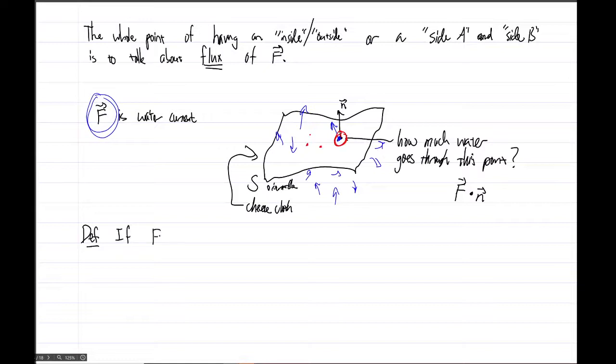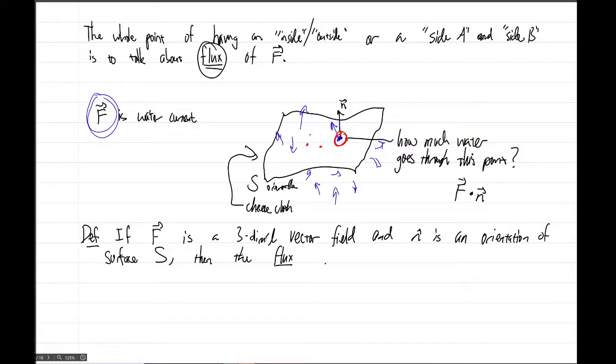So here's a new definition: if f is a three-dimensional vector field and n is an orientation of the surface S, then the flux—that's the new word, we kind of previewed it earlier, but now we're formally defining the flux—and to be more careful, it's defined as part of a longer phrase: the flux of the vector field f across the surface S.